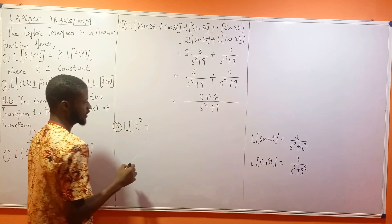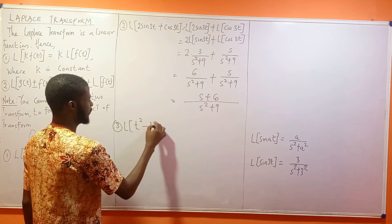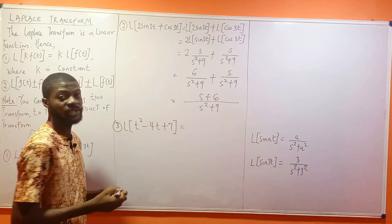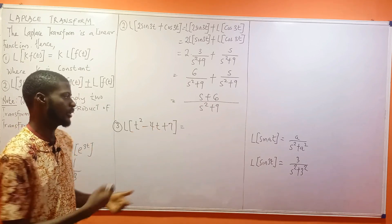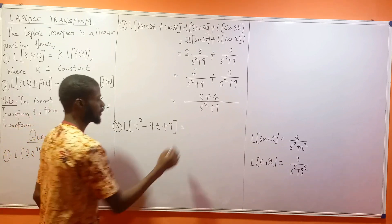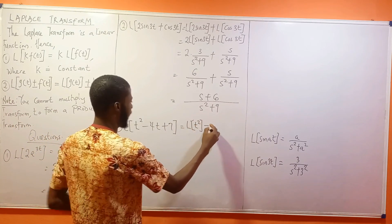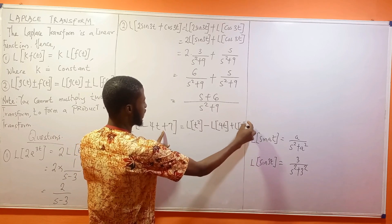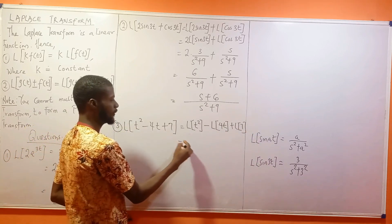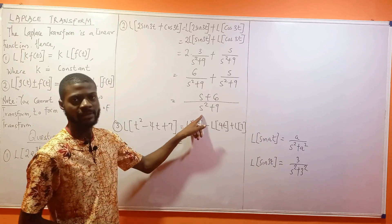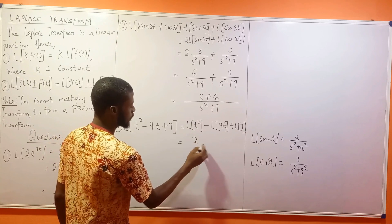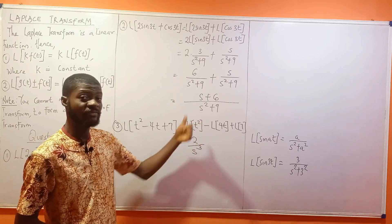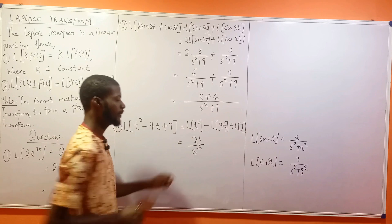Question 3: the Laplace transform of t² - 4t + 7. Since we have a sum and difference, we take the individual Laplace transform of everything: Laplace transform of t² minus Laplace transform of 4t plus Laplace transform of 7. The Laplace transform of t² becomes 2 over s³, because the rule is n! over s^(n+1), so 2! over s³.